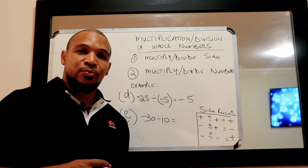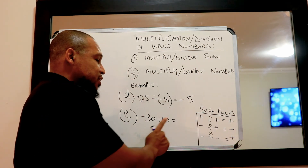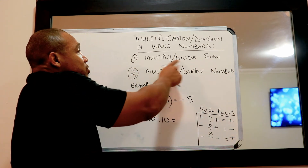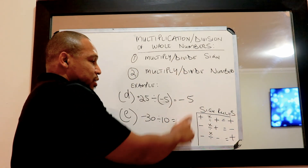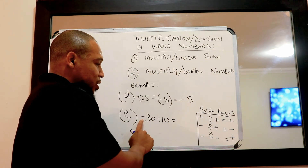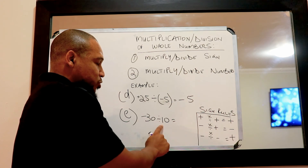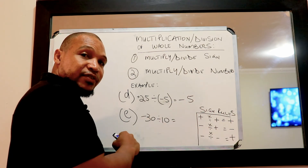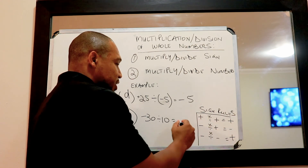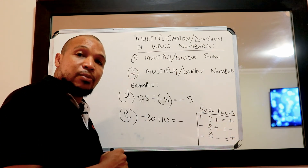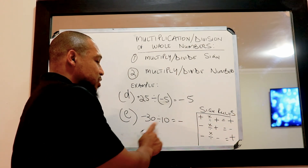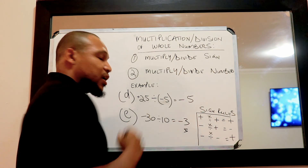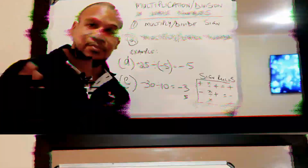One final example: minus thirty divided by ten. We first look at the sign — here we have a negative, and there's a positive in front of the ten. A negative and a positive gives me a negative. Step two, divide the numbers: thirty divided by ten is equal to three. And that's our answer — negative three.